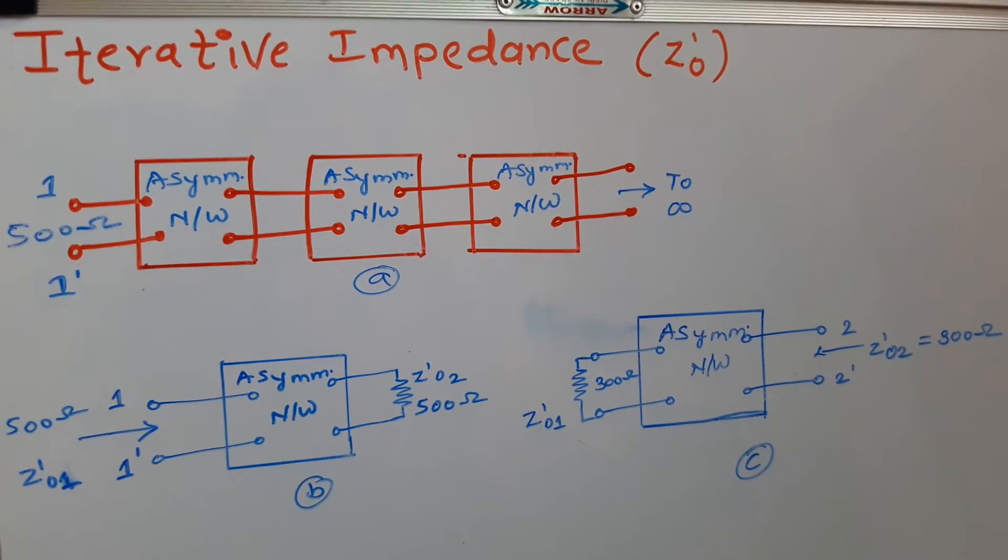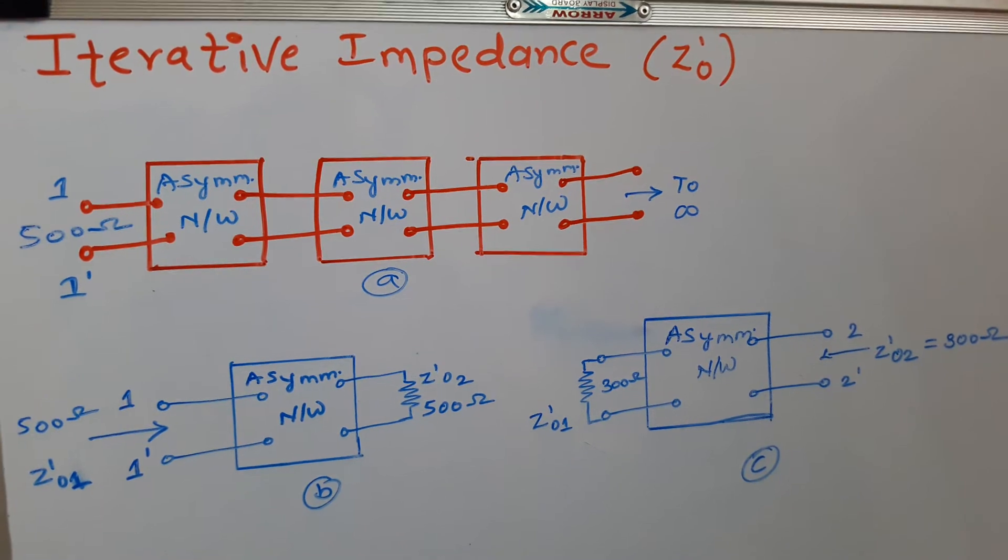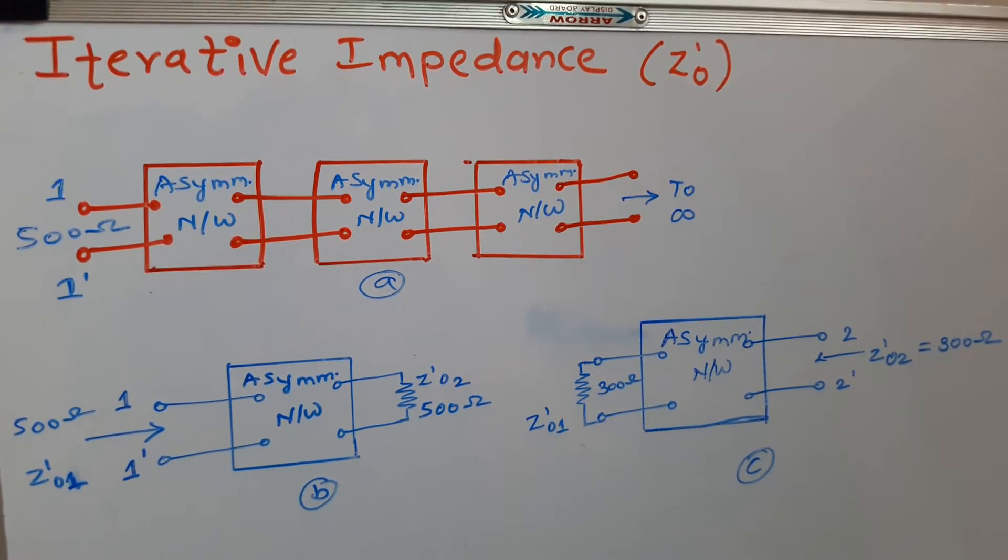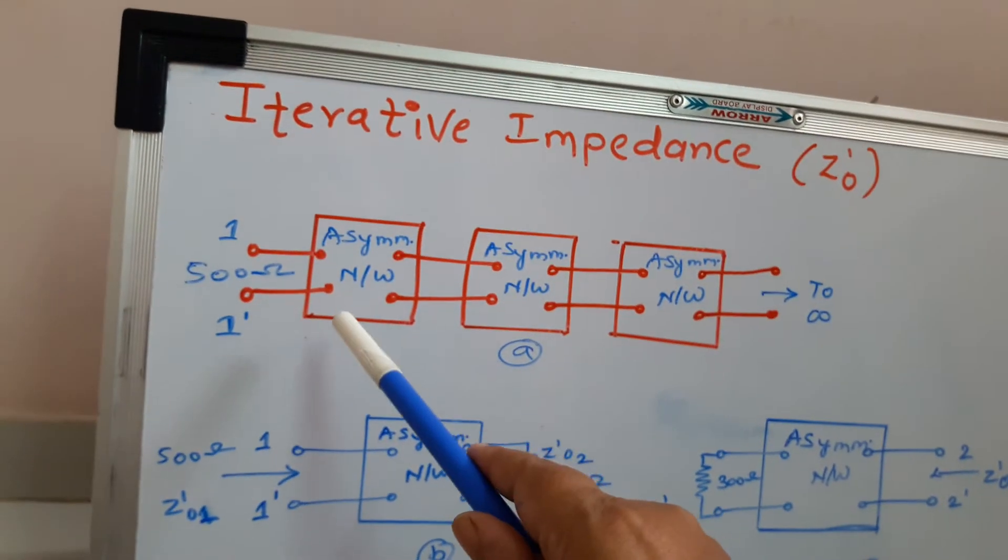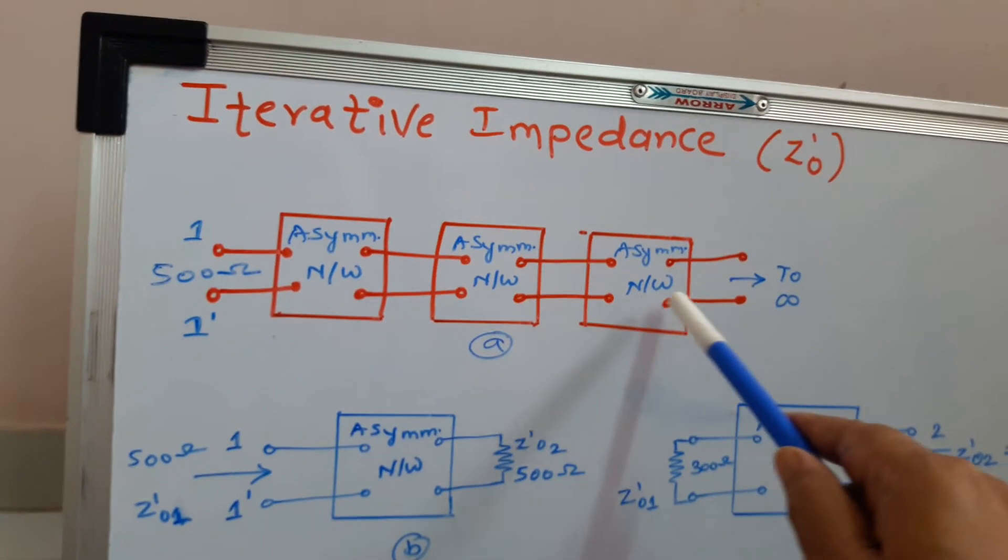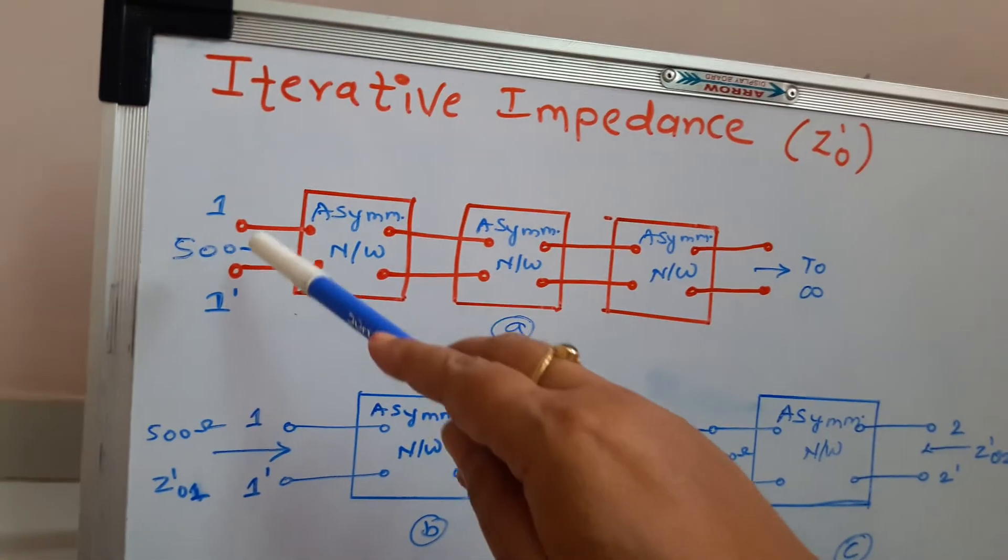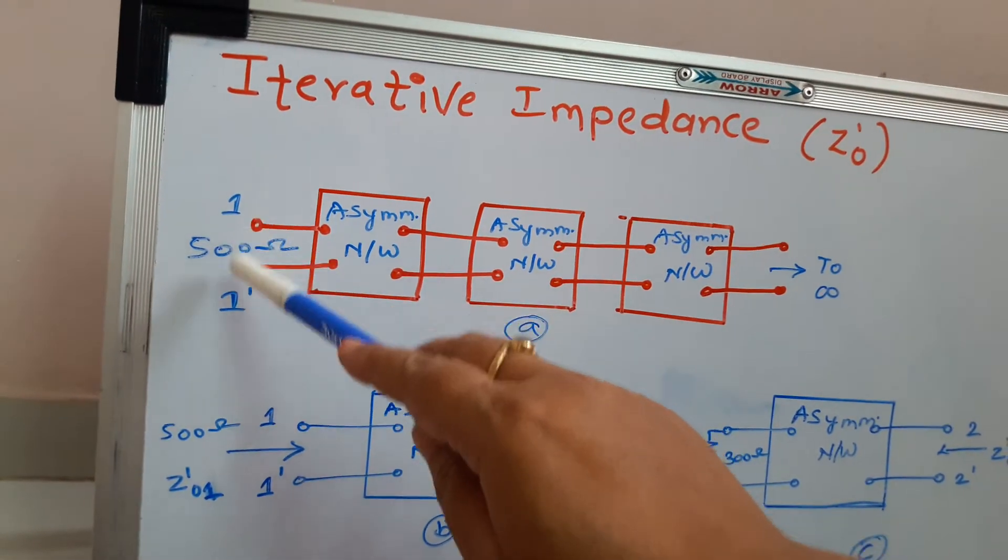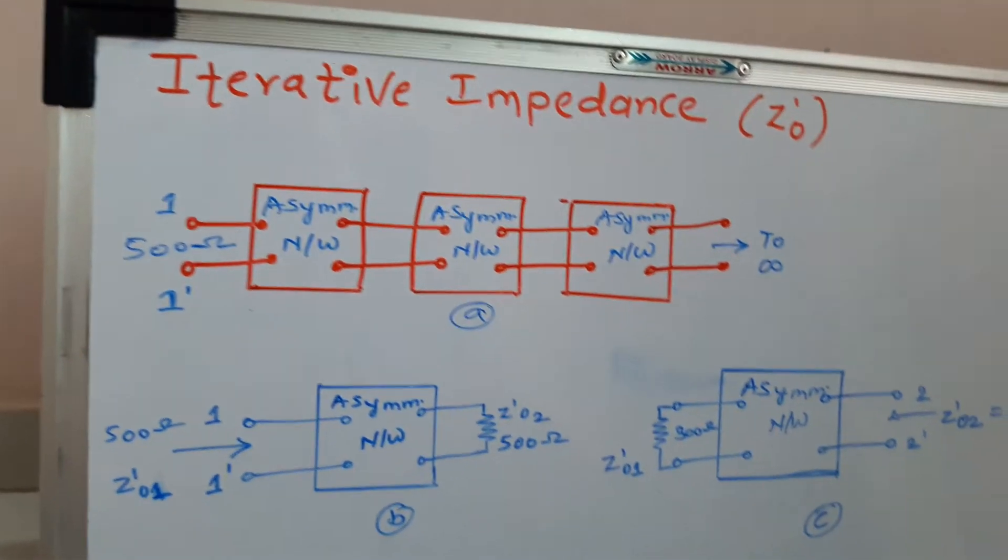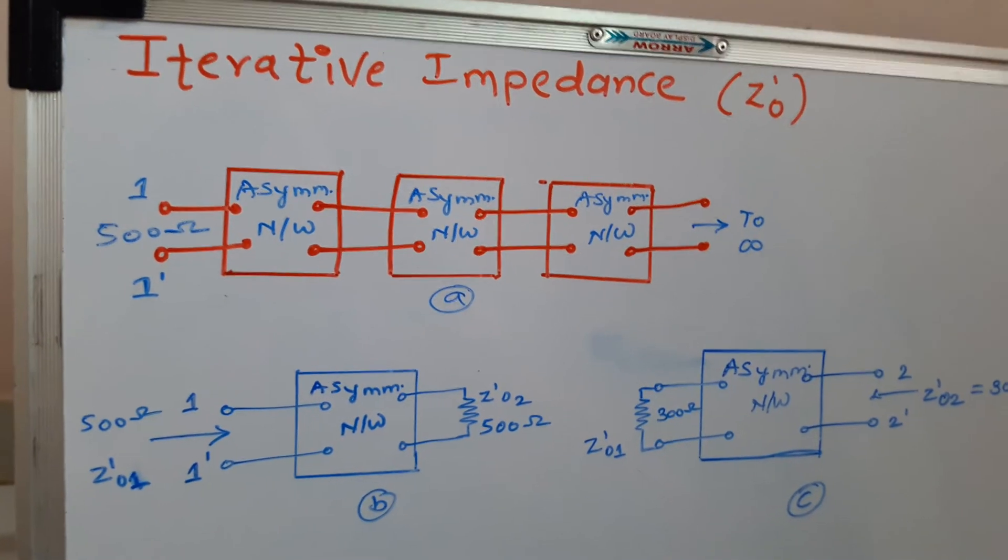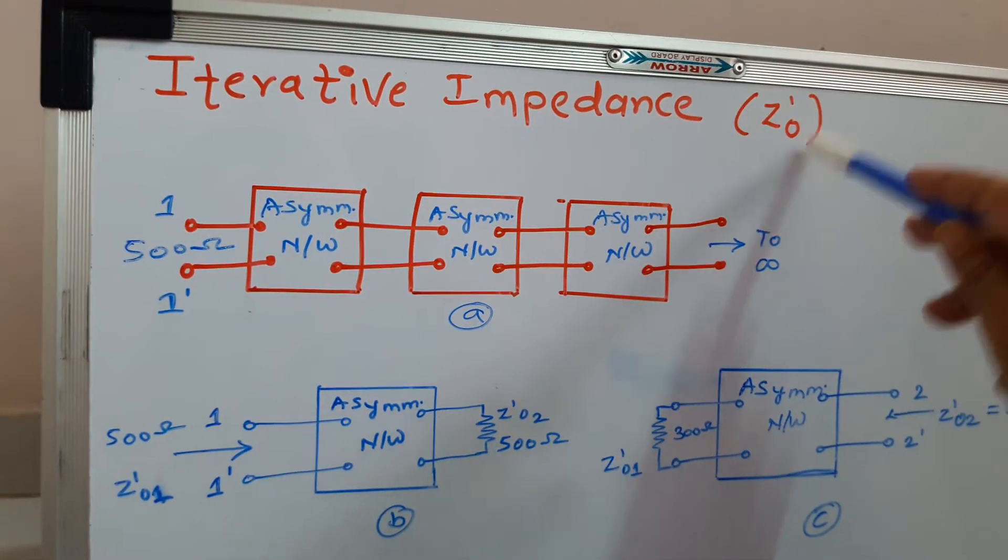then input impedance measured at one pair of terminals is called iterative impedance ZO'. For example, in figure A we are shown with infinite number of asymmetrical networks connected together, and if we measure impedance at the terminals 11', it may be 500 ohms, it may be 300 ohms or whatever, but this value will be called iterative impedance ZO'.